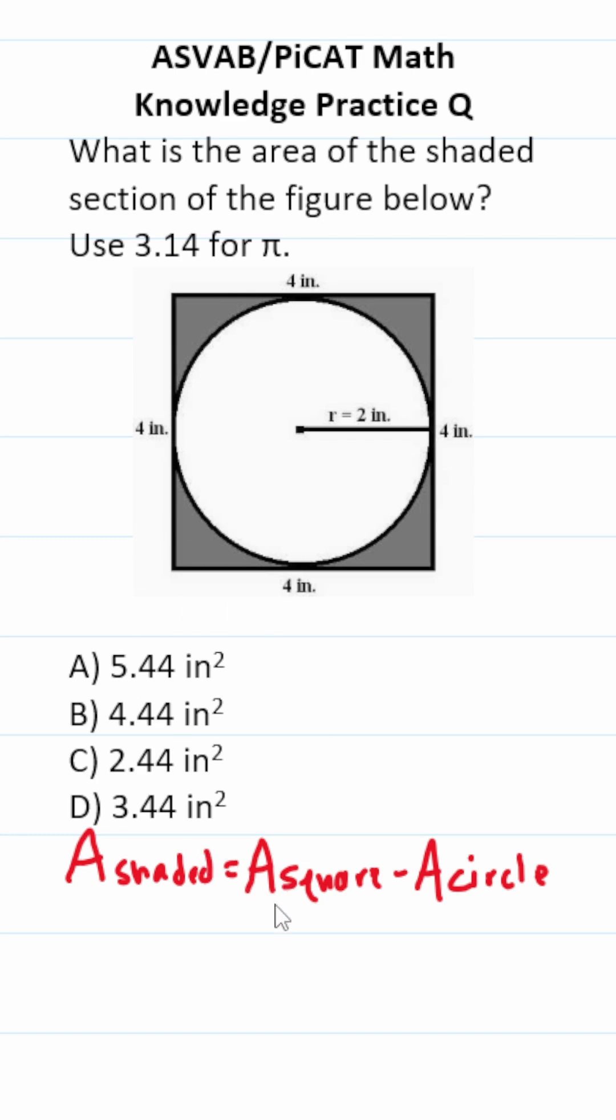So clearly to find the area of the shaded section, we're going to do the area of the square minus the area of the circle. To find the area of the square, it's going to be side length squared. Area of the circle is pi r squared. Thankfully enough, we have those things.